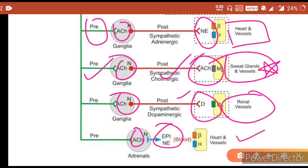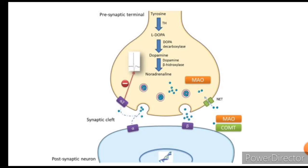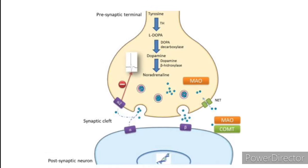Dopamine is present on renal vessels on the post-ganglionic neuronal site, and epinephrine can be present on heart and vessels on the post-ganglionic sites. In this part of the ANS, noradrenaline is the neurotransmitter at most of the sites. We'll study the synthesis of noradrenaline briefly because it will help us understand the mechanism of sympathomimetic drugs which act on the various steps of this synthesis.